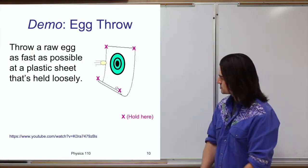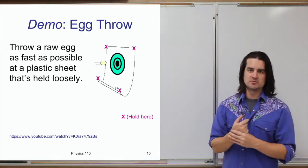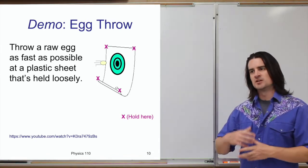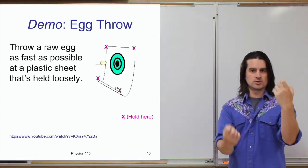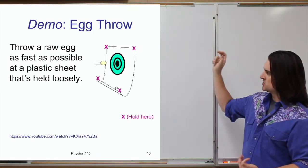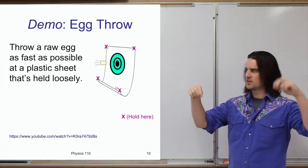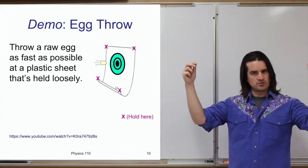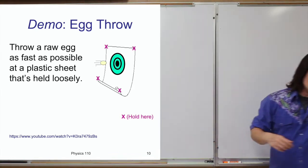As a demonstration of impulse — how you change an object's momentum — we're going to see somebody throw a raw egg at a bed sheet or plastic sheet held loosely and allowed to dangle a bit. When the egg hits the sheet, the sheet isn't taut and can actually give a bit. People throwing the eggs as hard as they can — the eggs don't break.